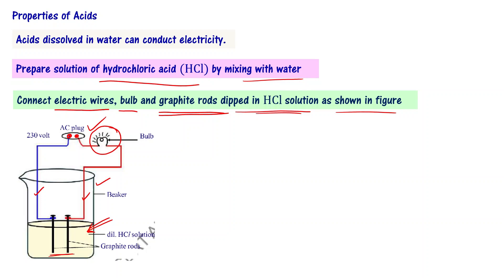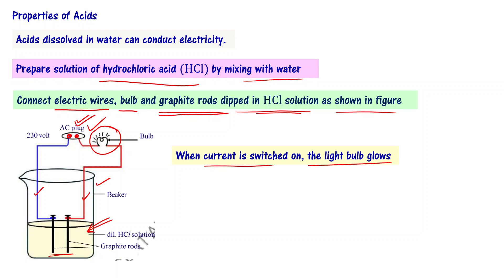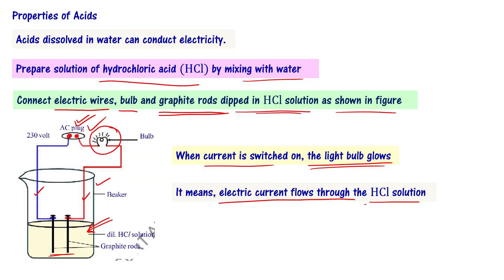If you switch on this AC plug, what will happen? Will the bulb glow? The current has to pass from one wire to the other. When the current is switched on, the light bulb glows — it means the electric current is flowing through the HCl solution. The two graphite rods are not connected to each other but are dipped in HCl solution. If HCl solution conducts electricity, then only the bulb is going to glow. Experimentally, when the current is switched on, the light bulb does glow.